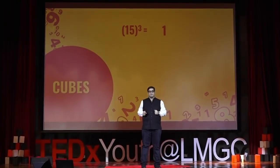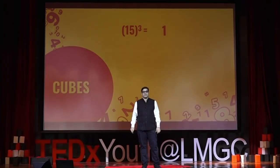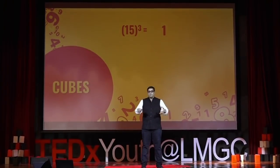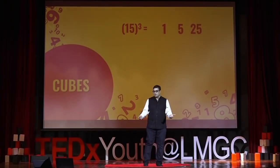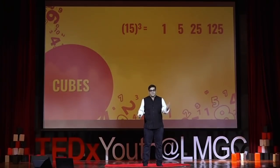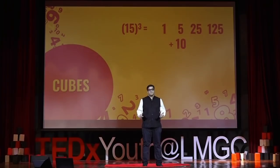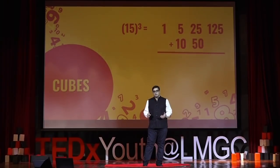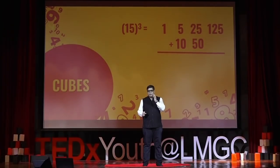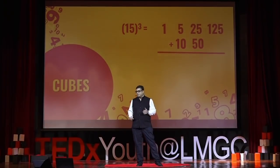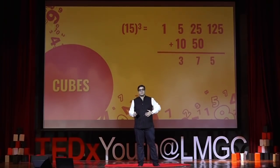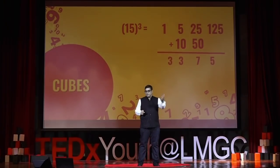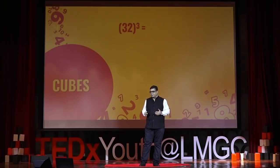Let's try 15³. a = 1, b = 5. B/a = 5. First term: 1. Then 1×5 = 5. Then 5×5 = 25. Then 25×5 = 125. Double the middle digits: 5 doubles to 10; 25 doubles to 50. Add: units column — 125 gives 5, carry 12. 25 + 50 + 12 = 87, so 7 there, carry 8. 5 + 8 = 13, so 3 there, carry 2. 2 + 1 = 3. Answer: 3375.